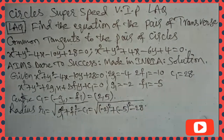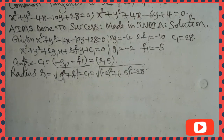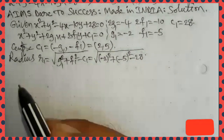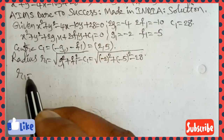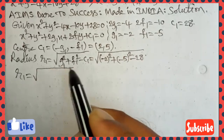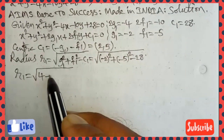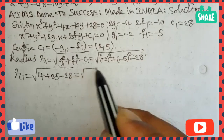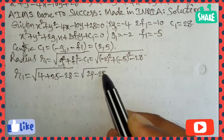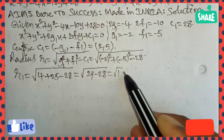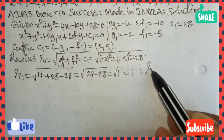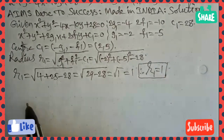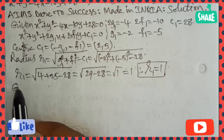Next we find center and radius. Center C₁ = (−g₁, −f₁) = (2, 5). Radius r₁ = √(g₁² + f₁² − c₁) = √(4 + 25 − 28) = √1 = 1. Therefore r₁ = 1. We have completed center and radius from the first circle.